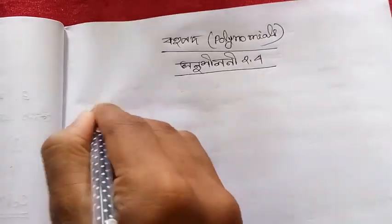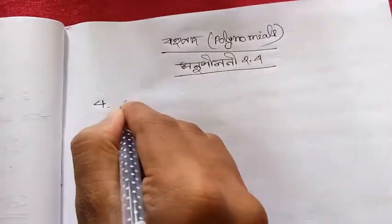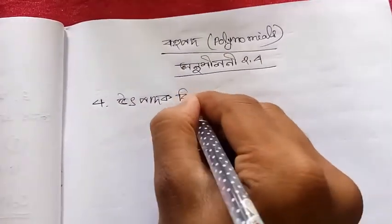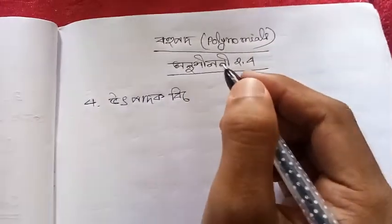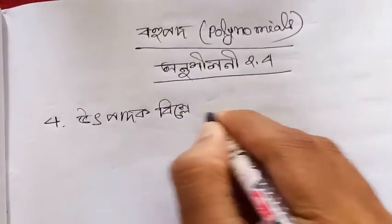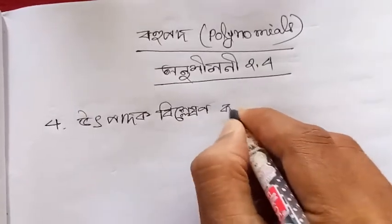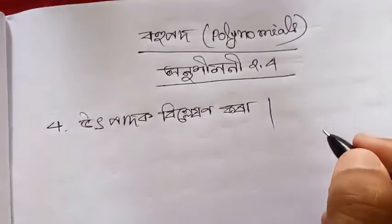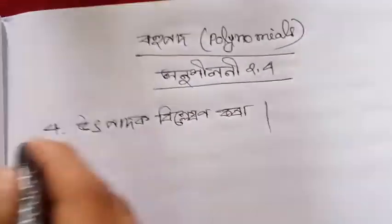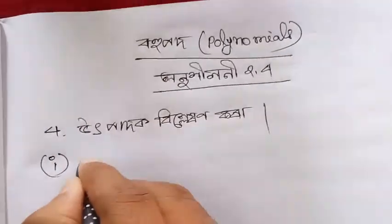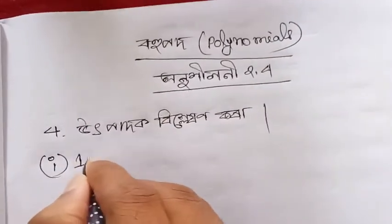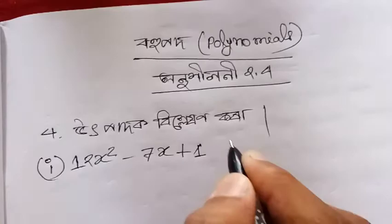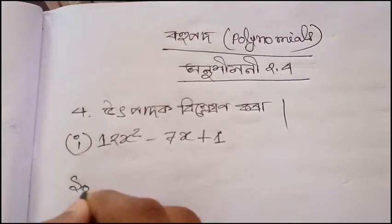Uhlani 2.4, Question number 4. Number 1: x square minus 7x plus 18. We need to factor this. Baraw x square minus 7x plus 18 — we look at minus 7x to split the middle term.